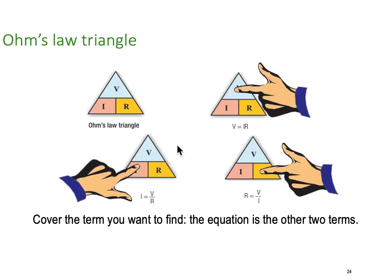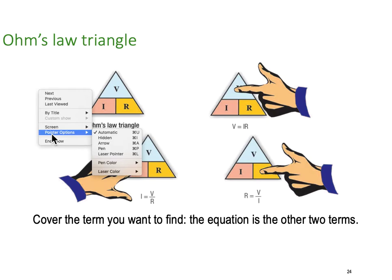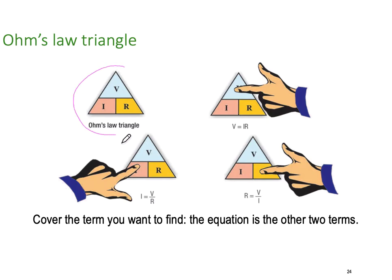We can use the Ohm's Law triangle — a handy way to remember the formulas. Simply cover up the term you want to find: cover up volts and you get I times R; cover up current I and you get voltage divided by resistance; cover up R and you get volts divided by current.